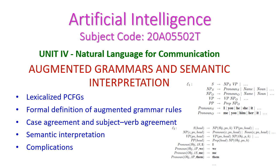In this artificial intelligence class we will see the augmented grammars and the semantic interpretation from the fourth unit on natural language for communication. In today's class we will see lexicalized PCFGs, that is probabilistic context-free grammar, formal definitions, augmented grammar rules, case agreement, and subject-verb agreement. In the next class we will see semantic interpretation and the complications.